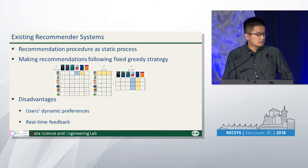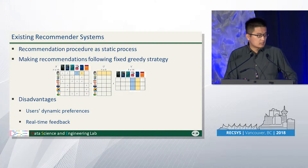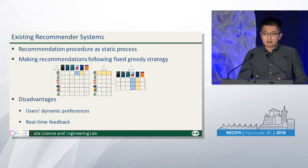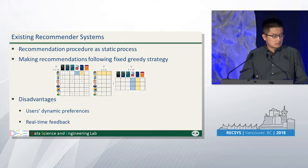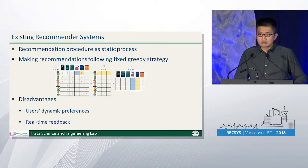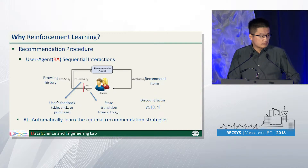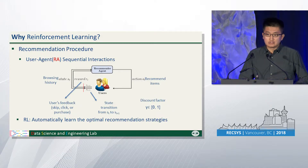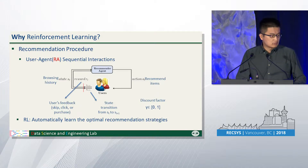Most existing Recommender Systems treat the recommendation procedure as a static process and make recommendations following a fixed strategy. However, this type of methods is hard to capture users' dynamic preference and hard to update their recommending strategy according to users' real-time feedback. Thus, in this paper, we consider the recommendation procedure as sequential interaction between the user and the Recommender Agent and leverage reinforcement learning to automatically learn the optimal strategy.